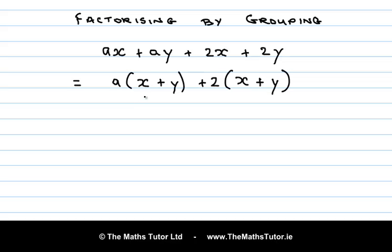Now we can see that there's a common factor between these two terms. Each of these terms has a factor x plus y. So we take out that common factor, and what's left behind is a plus 2. So we factorize this expression, which has four terms, into these two factors.